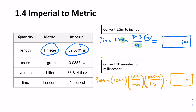Go ahead and solve this last one on your own. The answer is 600,000 milliseconds. With our conversion factors, dimensional analysis has everything cancel out except for our milliseconds.